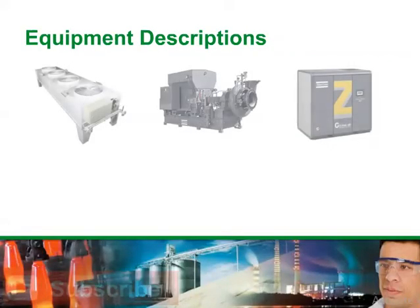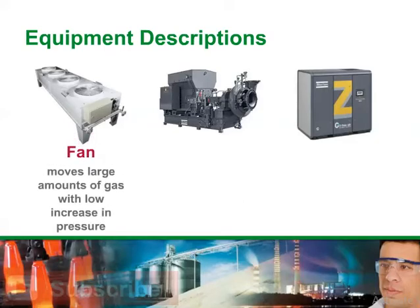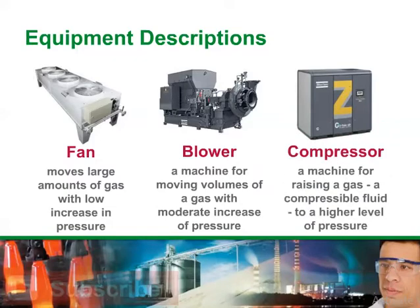Air compressors, blowers, and fans are all types of equipment that interact with air or other gases. A fan moves large amounts of gas with low increase in pressure, generally up to 0.4 bar g or 5 psi g. A blower is a machine for moving volumes of a gas with moderate increase of pressure, up to 1 bar g or 15 psi g. A compressor is a machine for raising a gas — a compressible fluid — to a higher level of pressure, greater than 1 bar g or 15 psi g.